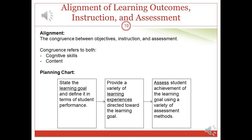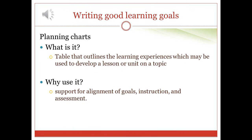Alignment refers to the degree to which learning objectives, the instruction provided, and assessment target the same content and the same cognitive skills. We want to make sure that if we formulate certain objectives, we provide instruction that helps students achieve those objectives, and we design assessments that measure those objectives and not something else. For instance, if we want students to be able to write a letter, having them just read sample letters and answer comprehension questions will not be sufficient. Teachers can use planning charts to help outline appropriate activities and assessments for each learning objective.